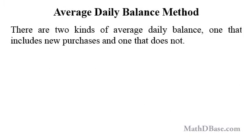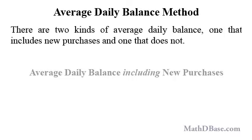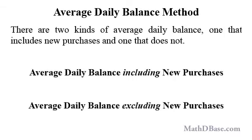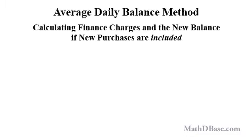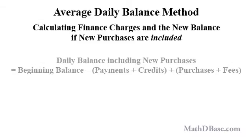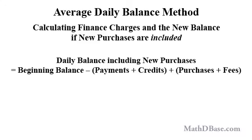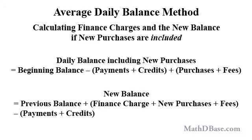There are two kinds of average daily balance: one that includes new purchases and one that does not. To calculate finance charges using the average daily balance including new purchases, we can use the following formulas. The daily balance including new purchases equals the beginning balance minus payments and credits plus purchases and fees. The new balance equals the previous balance plus finance charges, new purchases and fees, minus payments and credits.